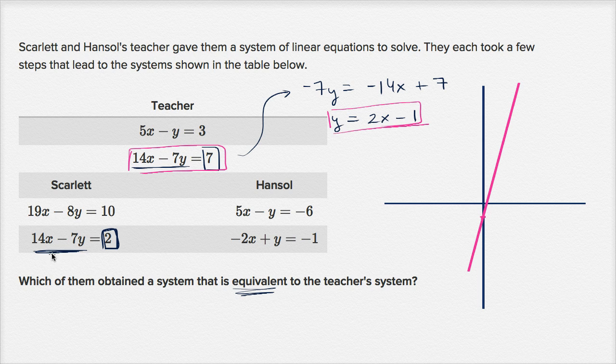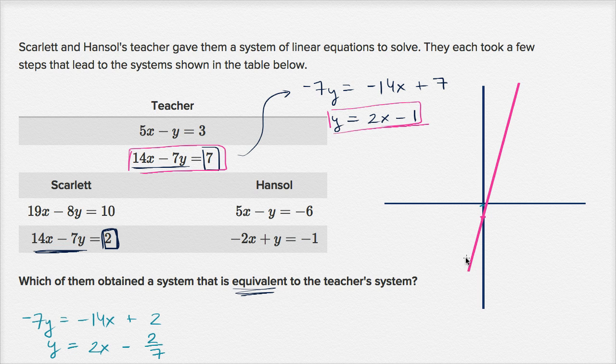And let's see, this one over here is going to be, if we do the same algebra, we're going to have negative 7y is equal to negative 14x plus 2, or y is equal to, I'm just dividing everything by negative 7, 2x minus 2/7. So this is gonna look something like this. Its y-intercept is minus 2/7. It's like right over there.